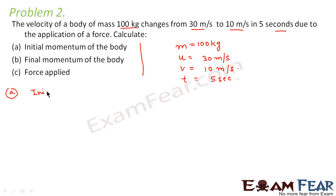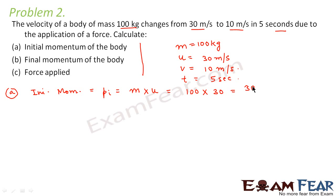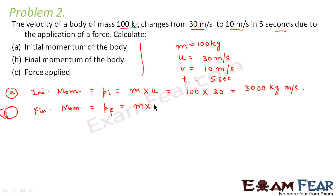What would be the initial momentum? Momentum is always equal to mass × velocity. So initial momentum = mass × initial velocity = 100 × 30 = 3000 kg·m/s. The second part asks for the final momentum. Final momentum pf = mass × final velocity = 100 × 10 = 1000 kg·m/s.